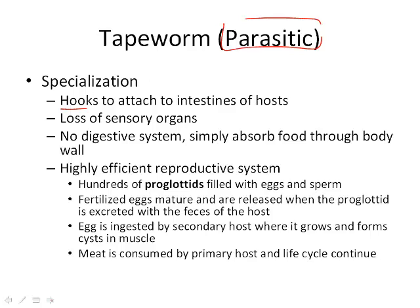Now for parasitic flatworms: they have special hooks to latch onto the intestines of the host. They don't have sensory organs like free-living ones because they don't need to sense their surroundings — they just stay in place and absorb food. There's no digestive system; they simply absorb nutrients we've already digested. Their reproductive system is highly efficient — 100% of those proglottids are filled with eggs and sperm. The fertilized eggs mature and are released when proglottids are excreted with the host's feces, then ingested by another host.